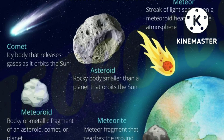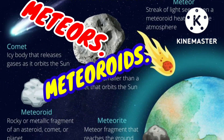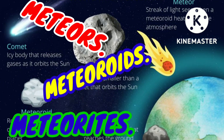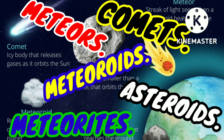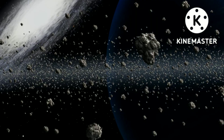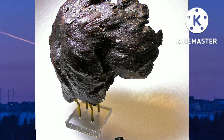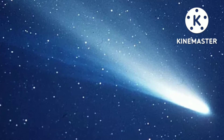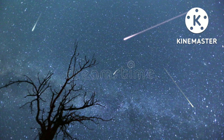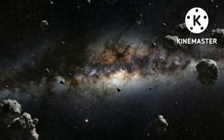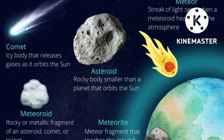Difference Between Meteoroids, Meteors, Meteorites, Asteroids, and Comets. Meteoroids, Meteors, Meteorites, Comets, and Asteroids are all related to shooting stars. But what to call an object depends on its location and composition. Here is a look at the differences between these objects.